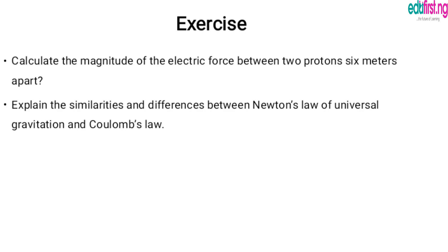Let's try to calculate the magnitude of the electric force between two protons which are six meters apart. This is simple. What we're just going to do is apply the formula. We have Coulomb's constant, we have q1 and q2, divided by r squared. Let's try to work on this and explain the similarities and differences between Newton's law of universal gravitation and Coulomb's law. Thank you for watching, and don't forget to like and share this video. Goodbye.